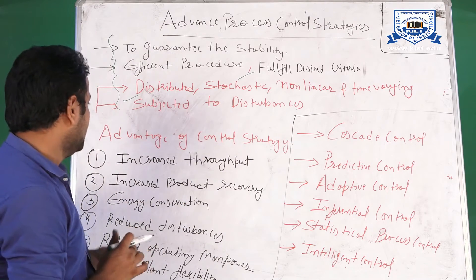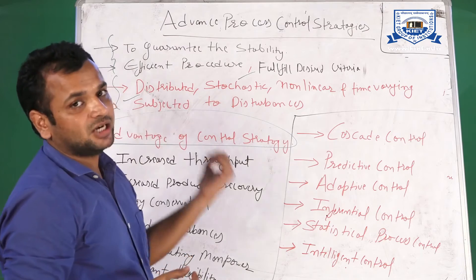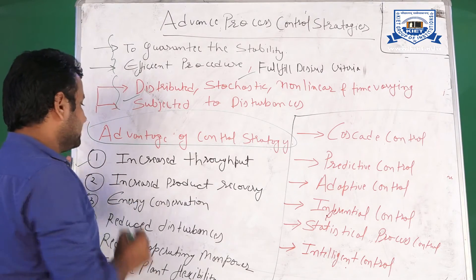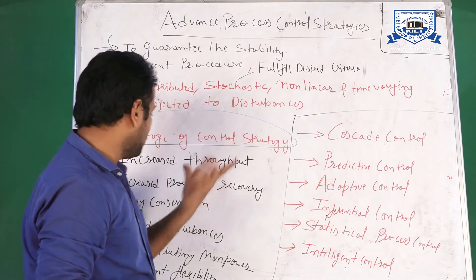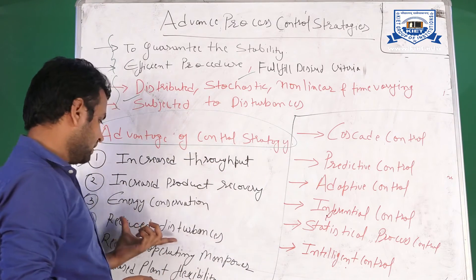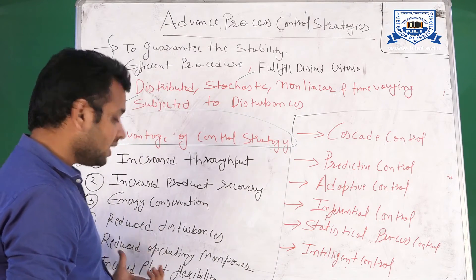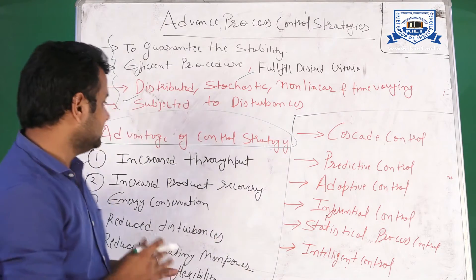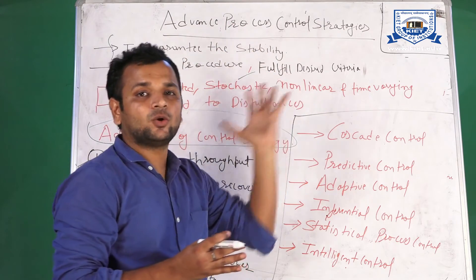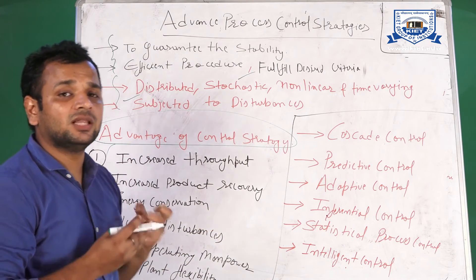There are various advantages when using advanced control strategies in process systems. These advantages include increased throughput, increased product recovery, energy conservation, reduced disturbances, reduced operating manpower, and increased plant flexibility. These are the key benefits of applying advanced process control strategies in our processes.